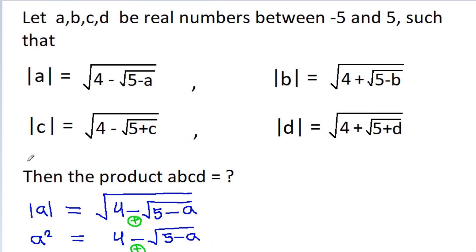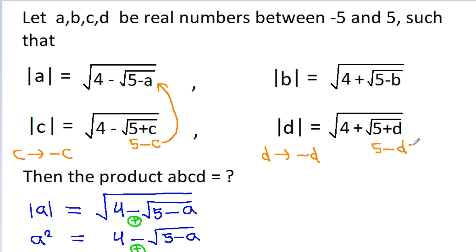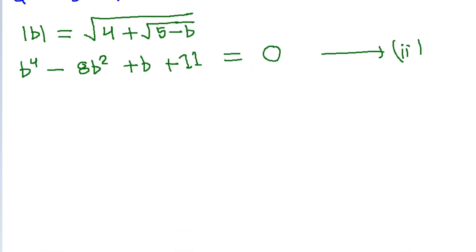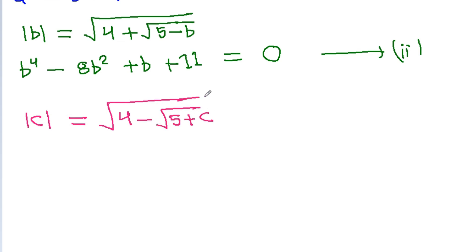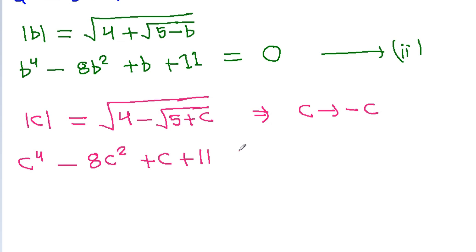Equation 3 is mod c equals root under (4 minus root(5 minus c)). If we replace c with minus c, then 5 minus c becomes 5 minus c, and this is similar to equation 2. So we get c⁴ minus 8c² plus c plus 11 equals 0. Suppose this is equation 3.